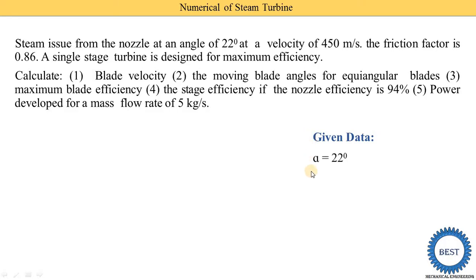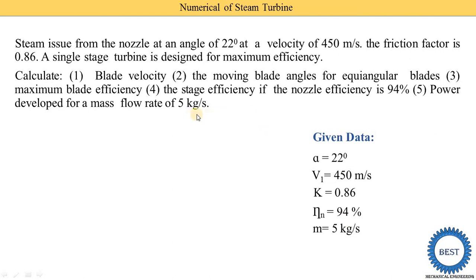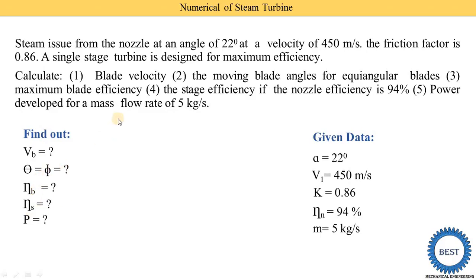We write down the given data. Alpha is given as 22 degrees (nozzle angle). Velocity of steam V1 is given as 450 meter per second. Friction factor K is given as 0.86. Nozzle efficiency is given as 94% and mass flow rate is given as 5 kg per second. We need to find: blade velocity Vb, theta and phi (both same), blade efficiency, stage efficiency, and power developed.